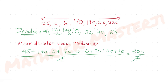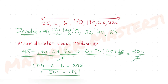Adding the known deviations: 45 + 0 + 20 + 40 + 60 = 165, plus (170−A) + (170−B) gives 505 − A − B. Setting this equal to 205: 505 − A − B = 205, so A + B = 300.